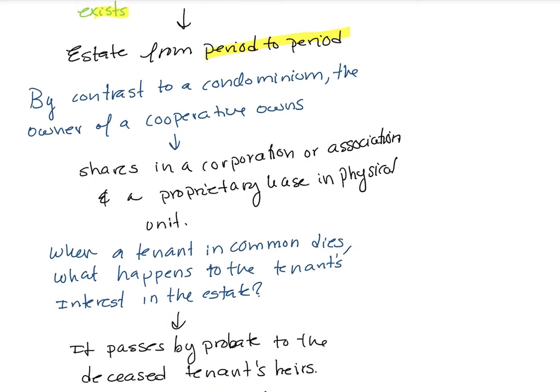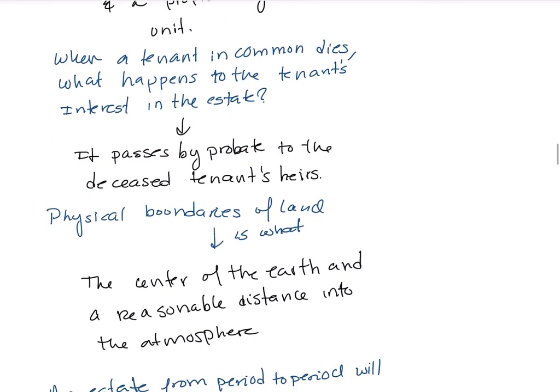In contrast to a condominium, the owner of a cooperative owns shares in a corporation or association and leases the physical unit. When a tenant in common dies, the tenant's interest in the estate passes by will or intestacy to the deceased tenant's heirs.